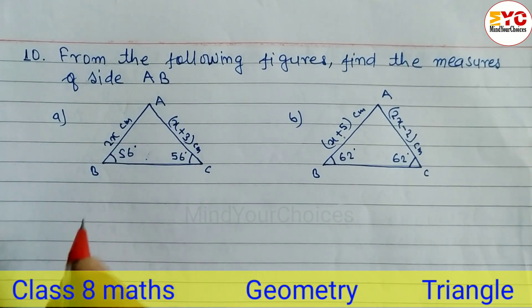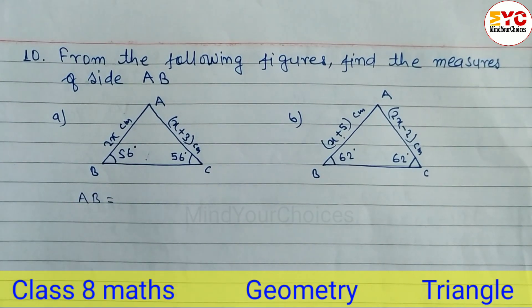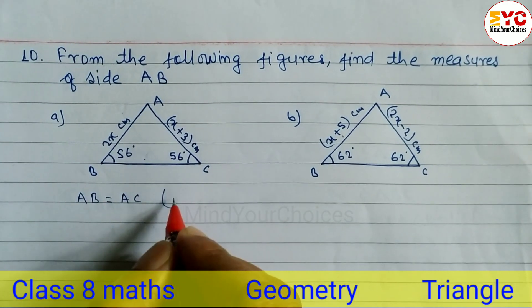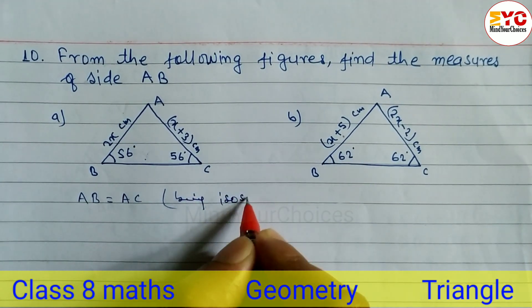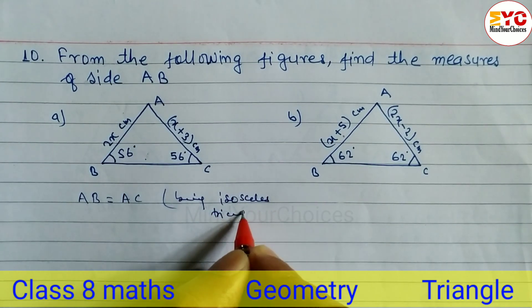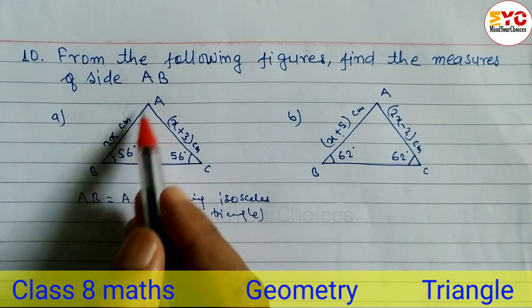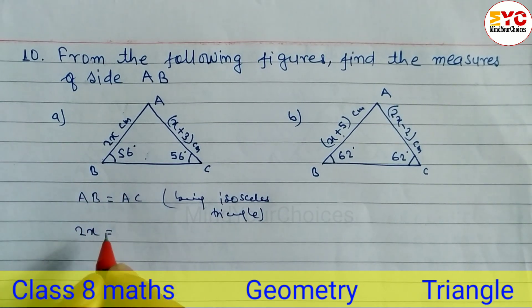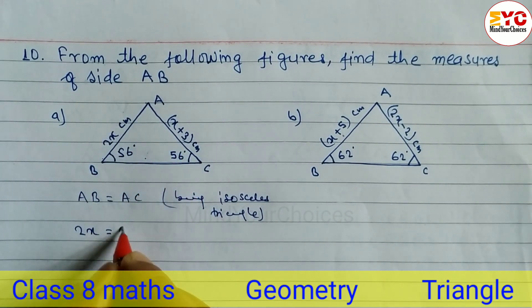In an isosceles triangle, if base angles are equal then the sides are also equal. So we can write AB is equal to AC. The reason we write down is: being an isosceles triangle. The value of side AB is equal to 2x, and AC is equal to x plus 3.